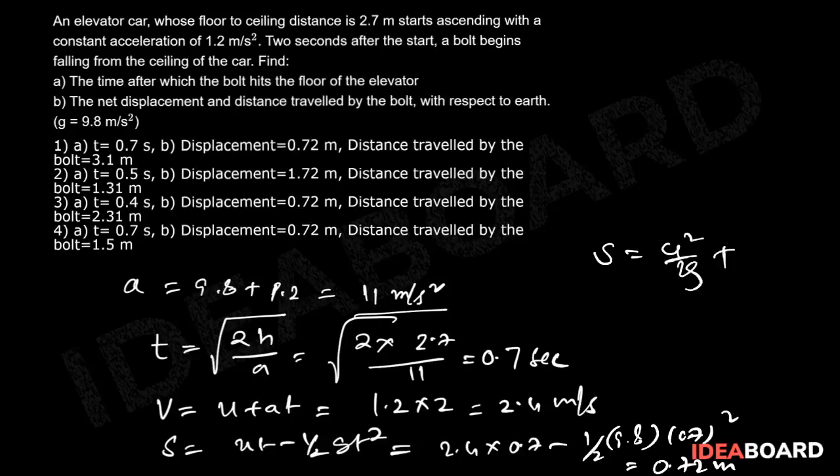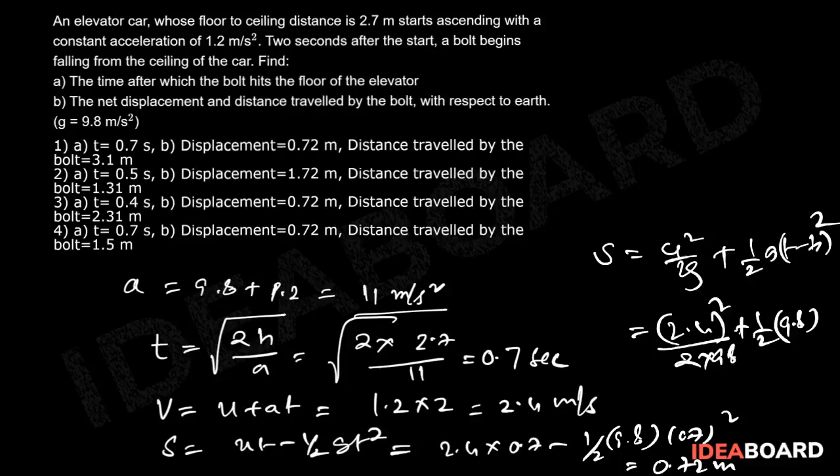plus ½g(t - t₀)², which equals 2.4² by 2 × 9.8 plus ½ × 9.8 × (0.7 - 0.245)², which equals 3.1 meters.